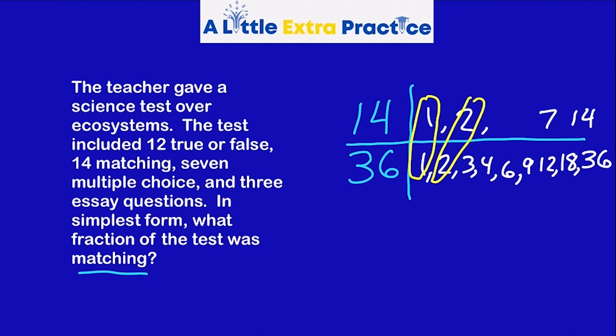And of the common factors, two is the biggest. So we call that the GCF or greatest common factor. I simply divide 14 divided by two, 36 divided by two. 36 divided by two is 18. Seven-eighteenths of the test is matching.